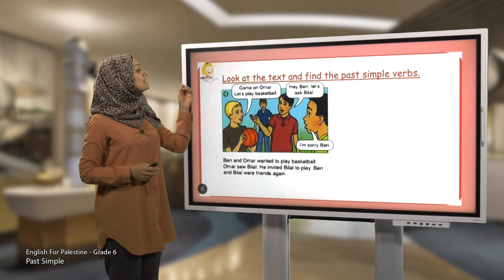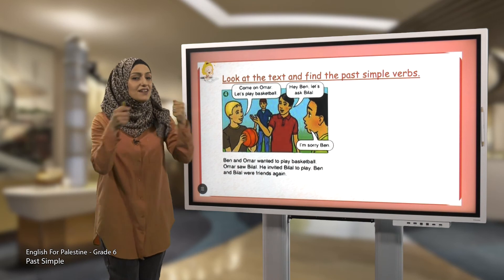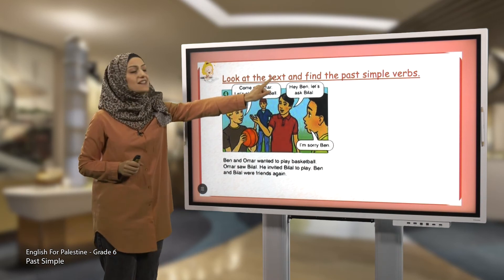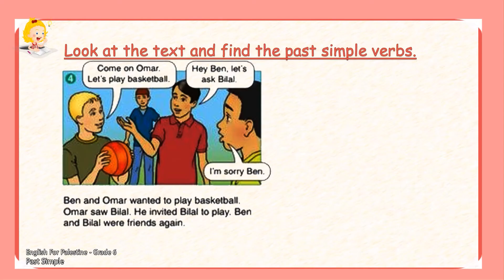Now let's look at this conversation and try together to find the past simple verbs. Let's read it together. Ben and Omar wanted to play basketball. Omar saw Bilal and invited Bilal to play. Ben and Bilal were friends.